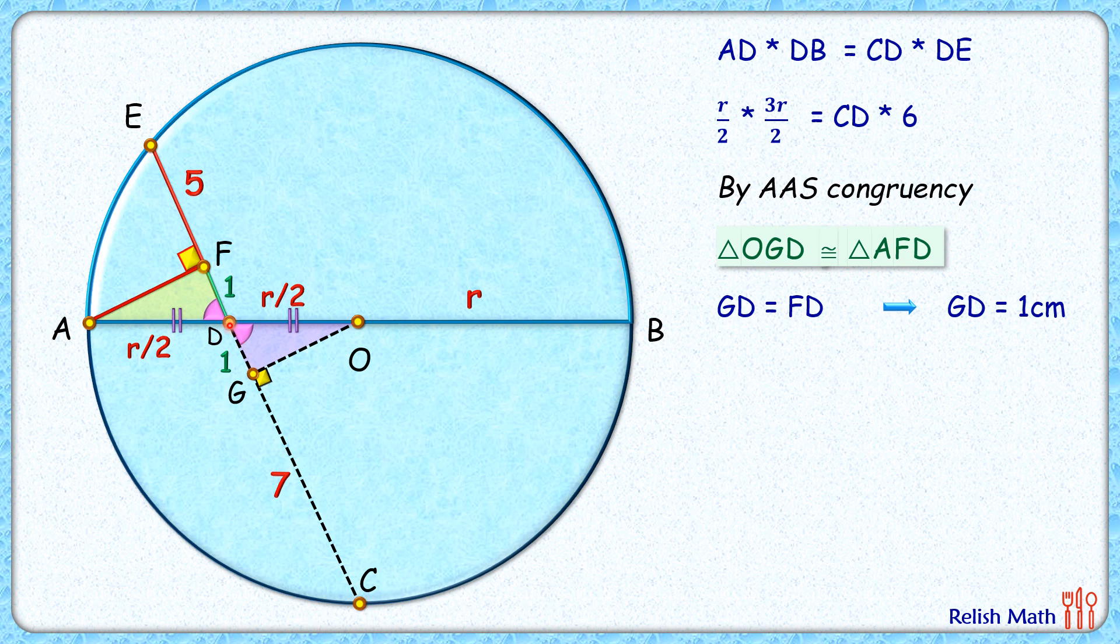And in this equation, let's put the CD length as 8 centimeters. Solving it, we'll get r squared as 64 and r as 8 centimeters, and that's our answer. I hope you enjoyed the solution. I will see you in the next video. Till then, tata, bye-bye!